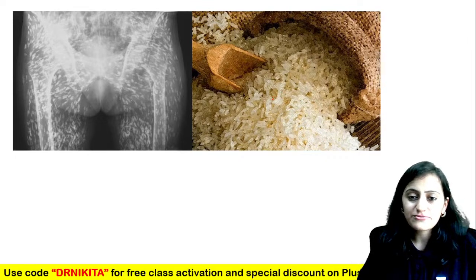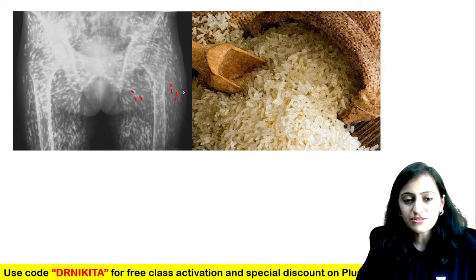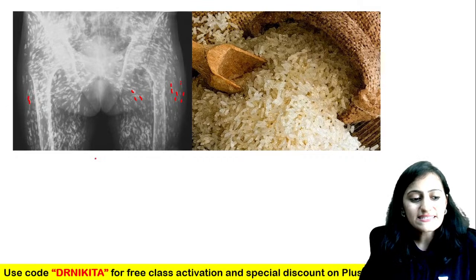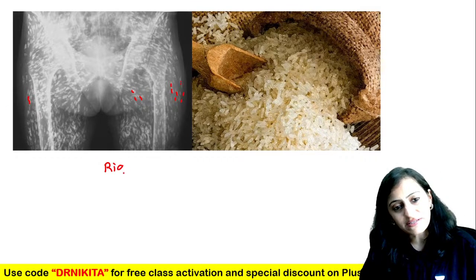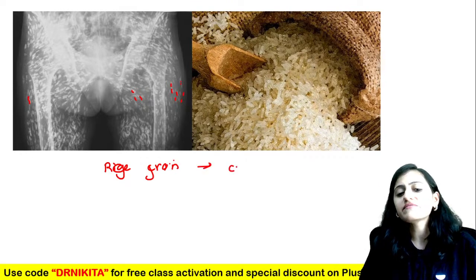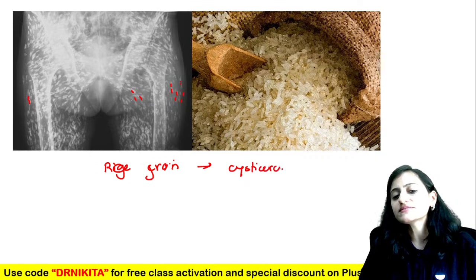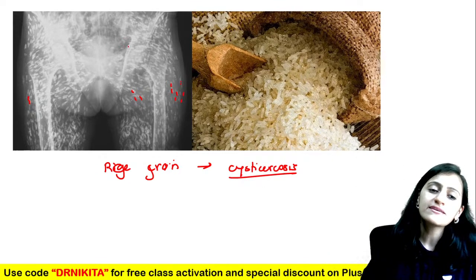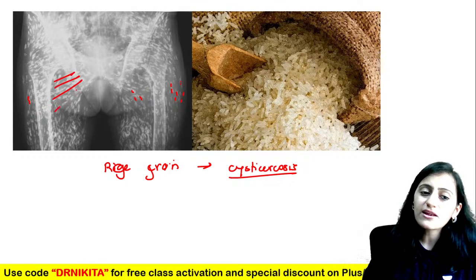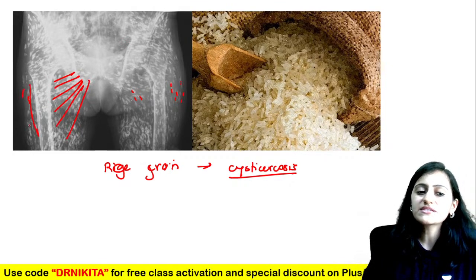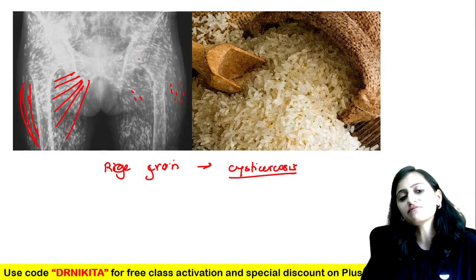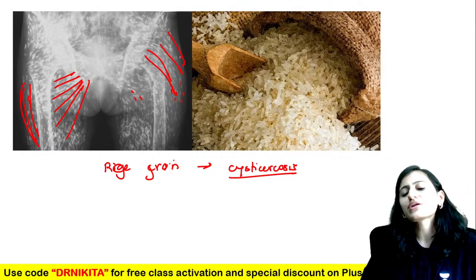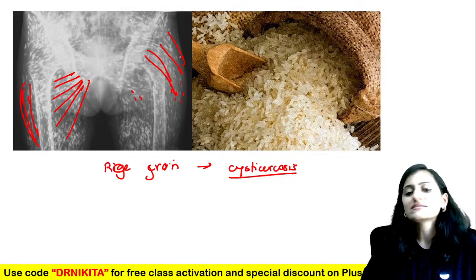Look at this rice grain calcification — that is the rice grain calcification seen with cysticercosis. When the parasite goes into the muscles it gets calcified. You can see the calcification is along the muscle fiber direction — that is your rice grain calcification in cysticercosis.